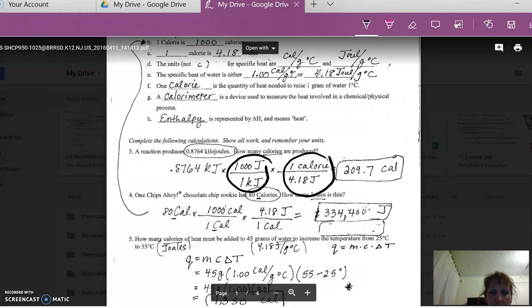Why is the conversion factor written this way? Because you're starting with kilojoules and once you start with kilojoules and you put kilojoules in the denominator, kilojoules divides out and you're left with joules. Why do you put joules on the next conversion factor on the bottom? Because you want calories, little calories.